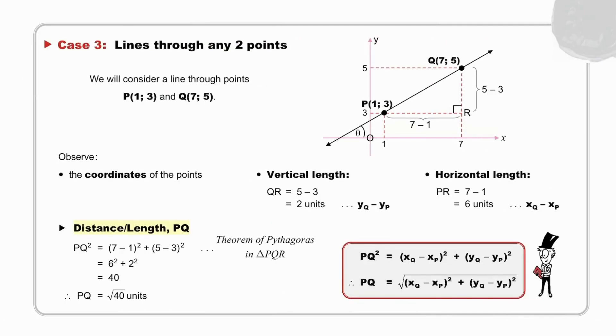Case 3: Lines through any two points. We will consider a line through points P and Q. Let's observe the coordinates of the points: (1, 3) for P, and (7, 5) for Q. The vertical length, QR, is 5 - 3, and the horizontal length, PR, is 7 - 1.